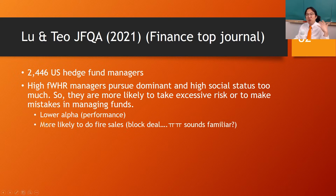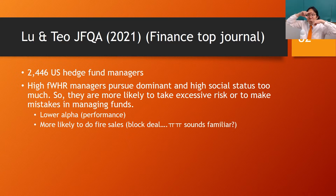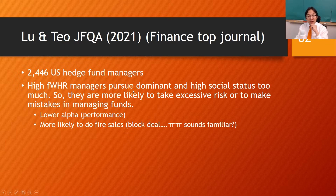He studied 2,400-plus hedge fund managers' facial pictures. What they find is that highly masculine faces — wider faces — are affected by testosterone. The height is not much affected, but the width is. As it turns out, high facial masculinity guys pursue dominant and high social status too much, making them more likely to take excessive risk or make mistakes in managing funds, resulting in lower alpha.